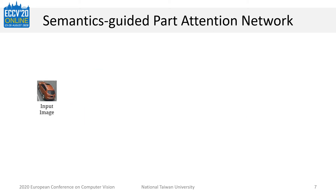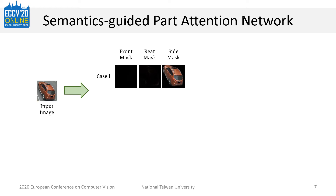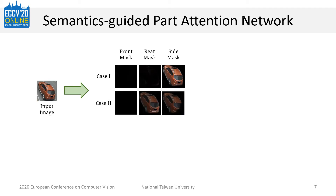However, after applying Mask Reconstruction Loss, we find that the training results are unstable and lead to undesired attention maps for vehicle images with two visible parts. Sometimes the network uses only a single representative mask to predict the whole vehicle mask, or it uses both masks each with weight 0.5. To overcome case 1, we design the Area Constraint Loss, which constrains the area of each attention map, forcing the network to generate part attention rather than foreground attention.